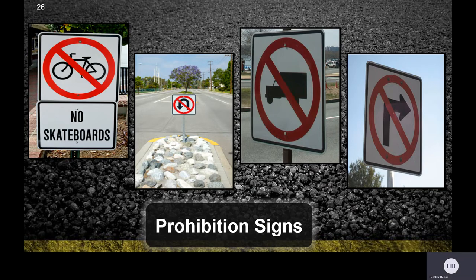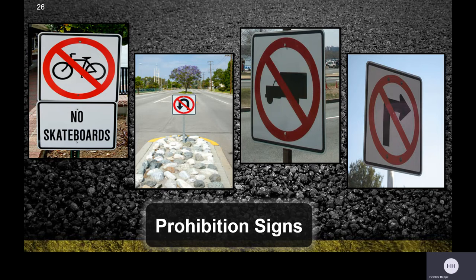Prohibition signs mean we are prohibited from doing something. Signs show no skateboards, no bicycles on specific sidewalks or areas. The no U-turn sign again means cars should not curve around the median and head back the other way — use a proper intersection. A no trucks sign may indicate an area where large vehicles are not safe on that roadway. A no right turn sign may be posted at an intersection for increased safety.